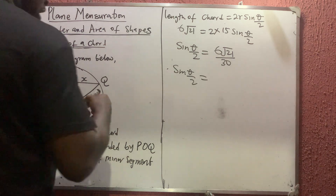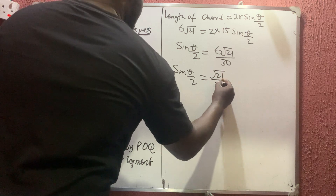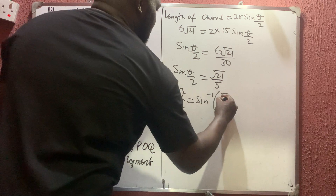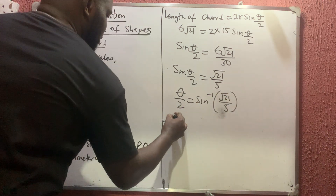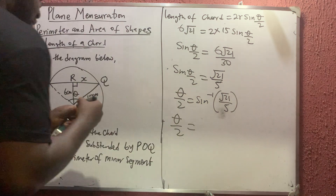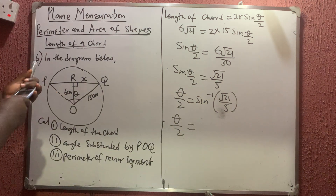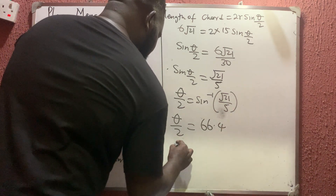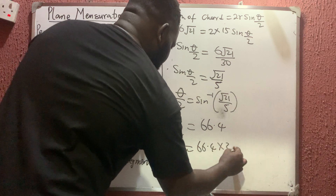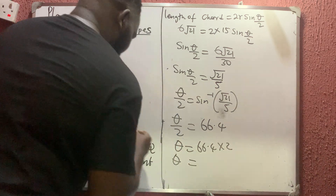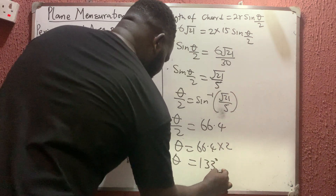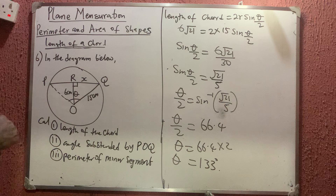Therefore θ/2 = sin⁻¹(√21 / 5), which gives approximately 66.4 degrees. So θ = 66.4 × 2 ≈ 133 degrees. That is the angle subtended — approximately 133 degrees.